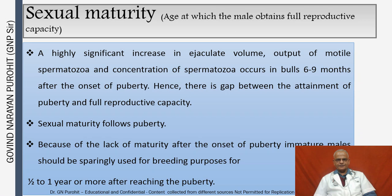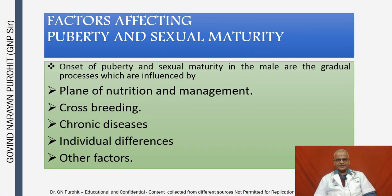Sexual maturity differs from puberty in that it is the age at which the male obtains full reproductive capacity. A highly significant increase in ejaculate volume, output of motile spermatozoa, and concentration of spermatozoa occurs in bulls six to nine months after the onset of puberty. Hence there is a gap between attainment of puberty and attainment of full reproductive capacity. Because of lack of maturity after puberty onset, immature males should be sparingly used for breeding for half to one year or more after reaching puberty.